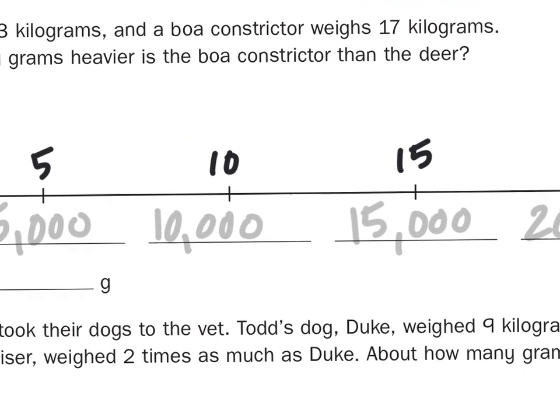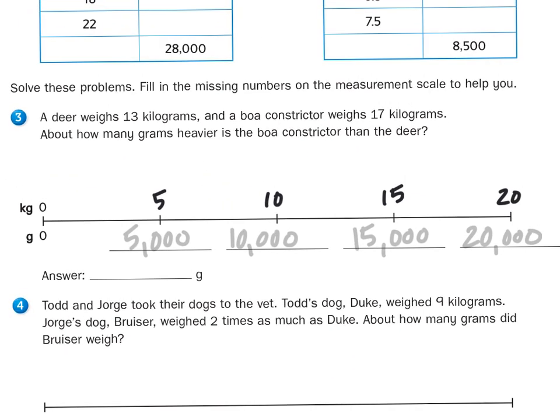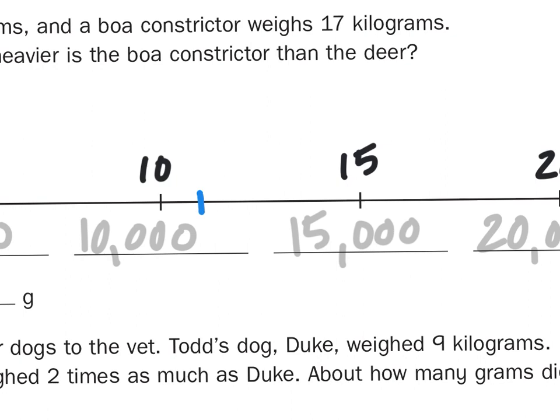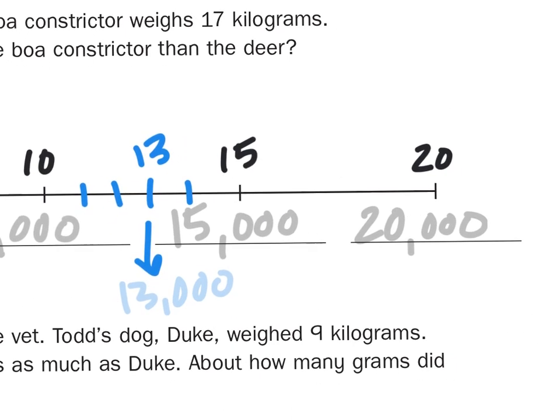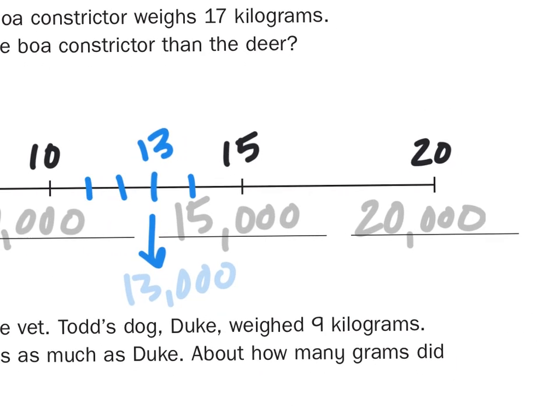So, 13 kilograms live right about here. 11, 12, 13, 14. So 13 would be right here. So that would be 13,000 grams. 17 would live right here. There's 17. And so, in grams, 17 kilograms would be the equivalent of 17,000.